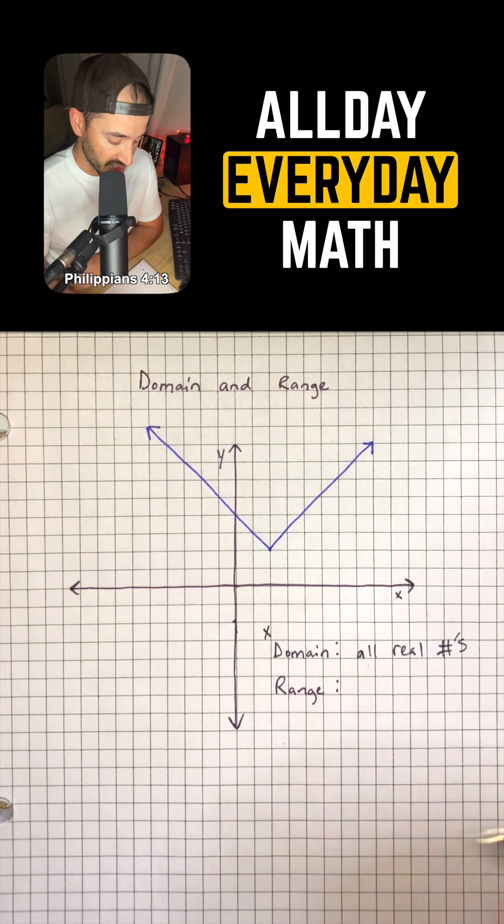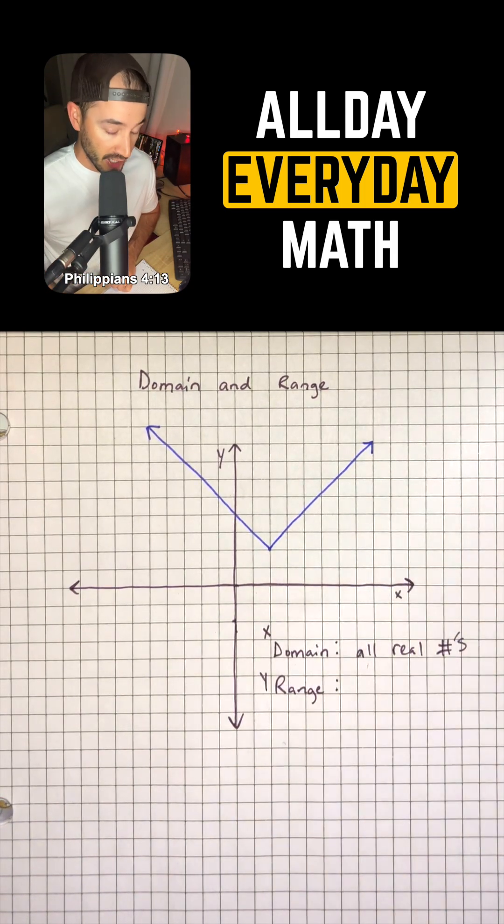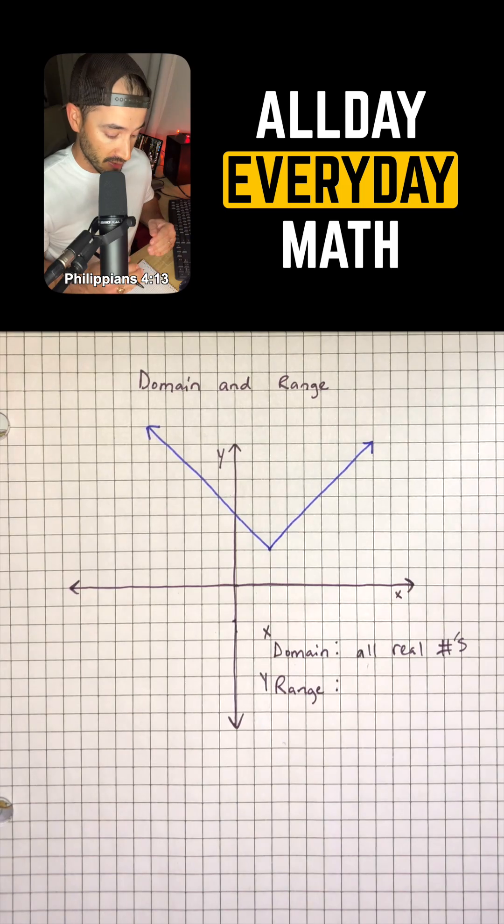Now, our range is all the possible Y values and on a graph, that's going to look like up and down.